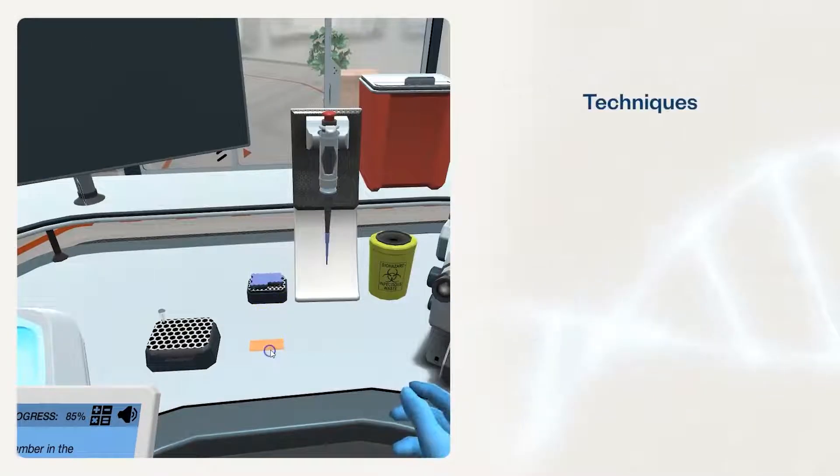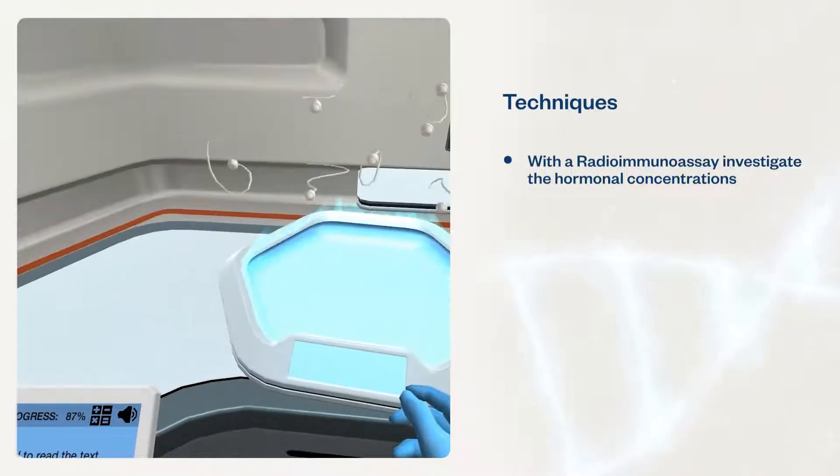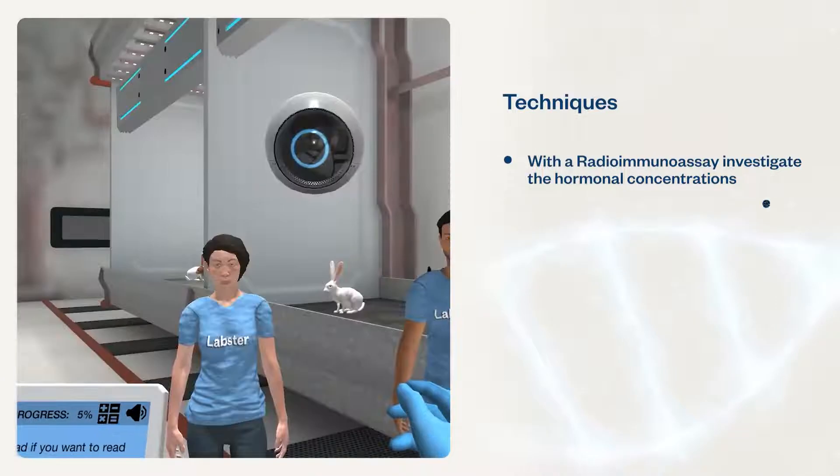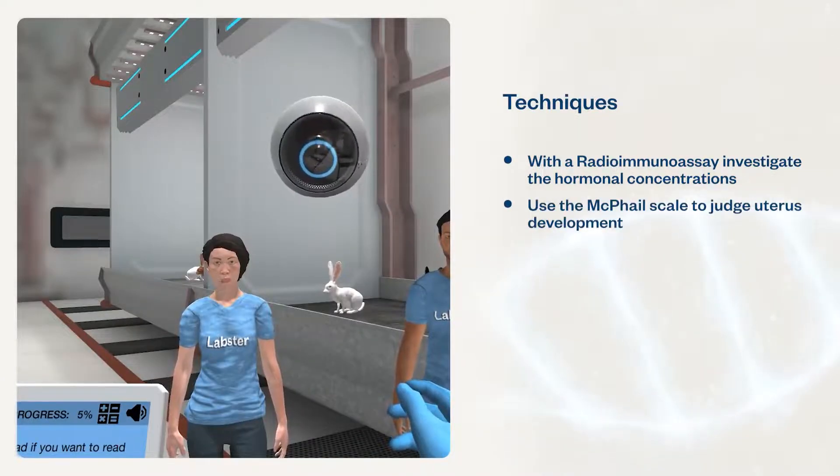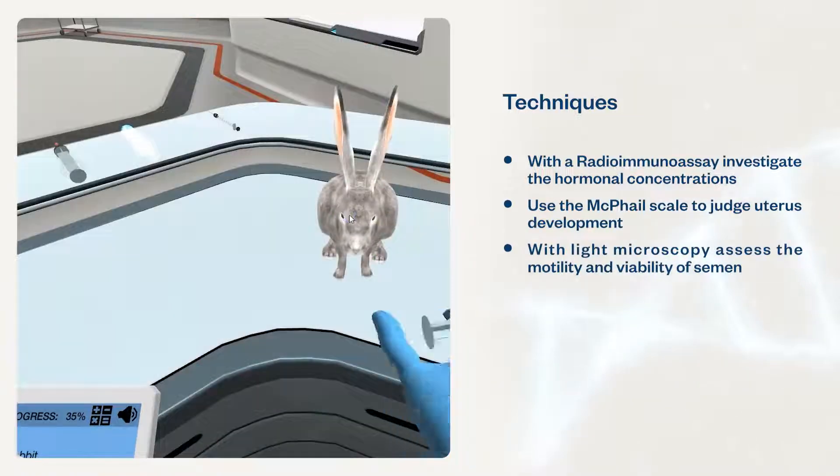Students will use techniques such as radio-immunoassay to investigate hormonal concentrations in blood serum, the McPhail scale to judge uterus development, and light microscopy to assess the motility and viability of semen.